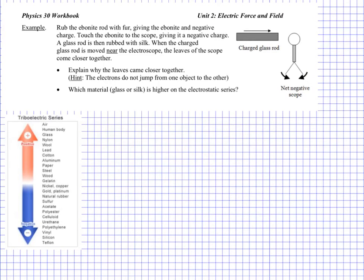For the second example, we've got an electroscope, which you'll recall from class — we'll be using these quite a bit. It's basically a charged sphere with conducting legs and then these very light leaves at the bottom that will be affected by electric charge, by electric forces very easily. So if they happen to be equally charged, they'll push away from each other. And if they're neutrally charged, they will just relax down and fall vertically. In this example, we have an ebonite rod — we're rubbing an ebonite rod with fur, which gives the ebonite a negative charge.